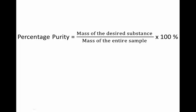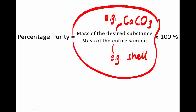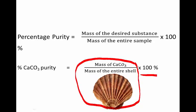The mass of the desired substance — that means the one we're interested in, for example calcium carbonate — divided by the mass of the entire sample, for example the mass of the whole shell. This gives us the fraction of the whole shell that is just the calcium carbonate part. Then we multiply that fraction by 100% to convert it into a percentage, giving us the mass of calcium carbonate divided by the mass of the whole shell, converted to a percentage.